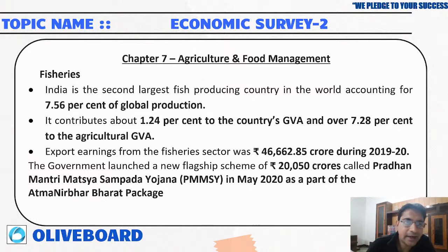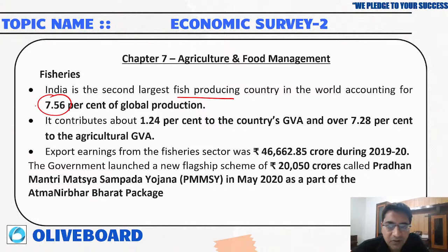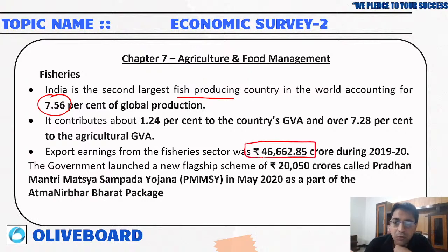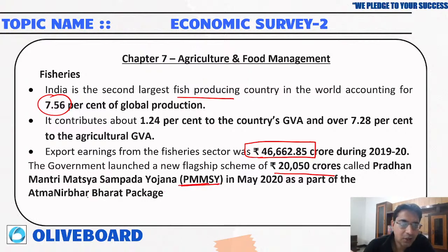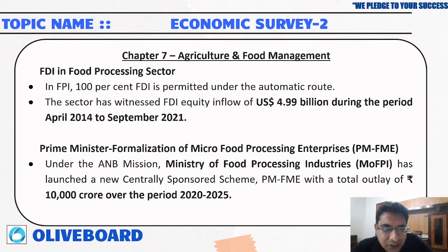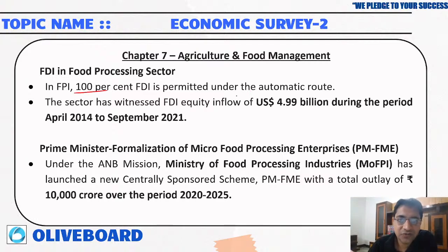India is the second largest fish producing country, accounting for around 7.56 percent of global fish production, with export earnings of rupees 46,662 crore. The government launched the Pradhan Mantri Matsya Sampada Yojana with a budget of rupees 20,050 crore as part of the Aatma Nirbhar Bharat package.